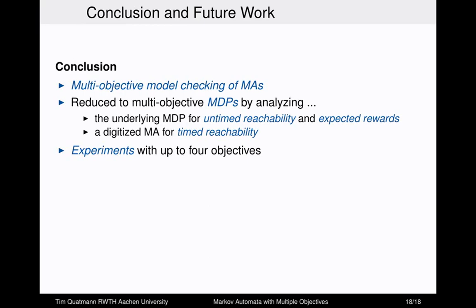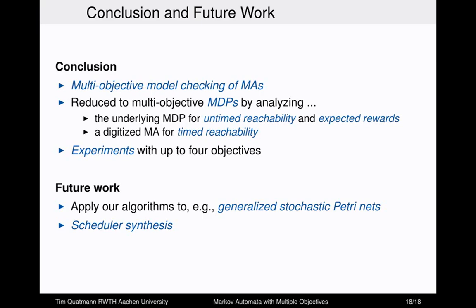In conclusion, we discussed multi-objective model checking for Markov automata. The main idea is to reduce this to multi-objective MDP model checking — using the underlying MDP for untimed reachability and expected reward objectives, and the digitized Markov automaton for timed reachability. Experiments show this is applicable for practical benchmarks, even with up to four objectives. For future work, we plan to apply our algorithms to generalized stochastic Petri nets, and we also want to synthesize actual schedulers rather than only determining which values are achievable.